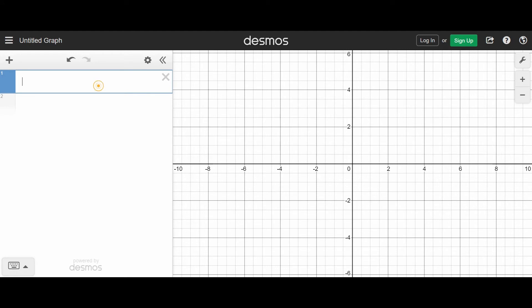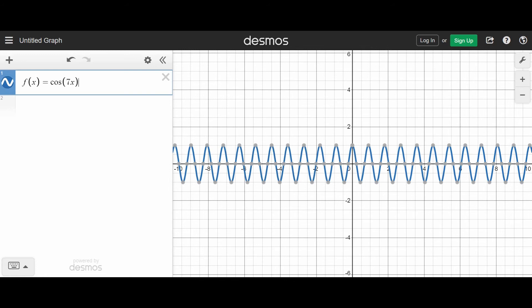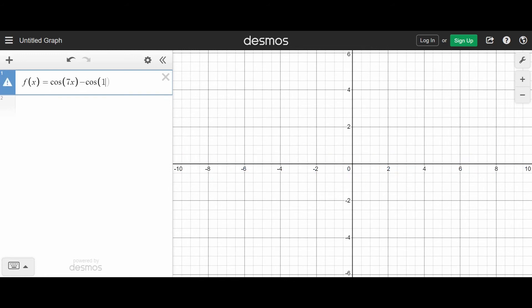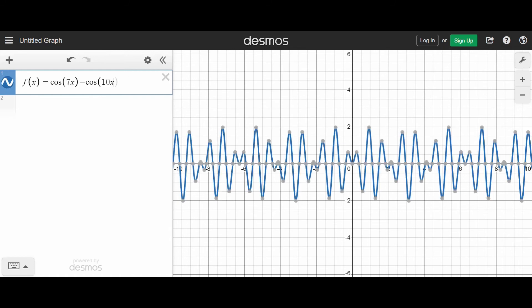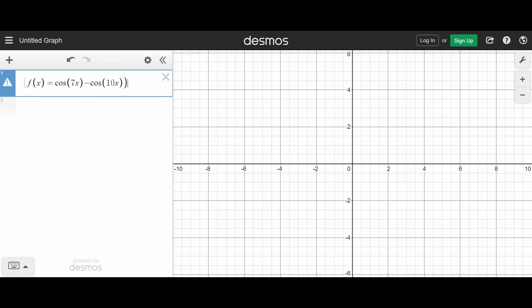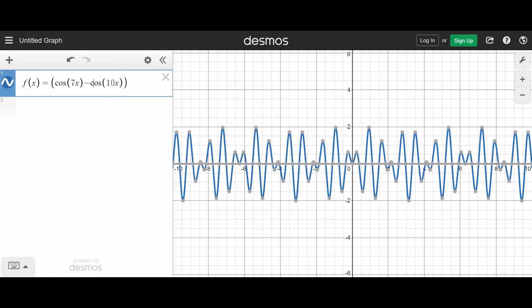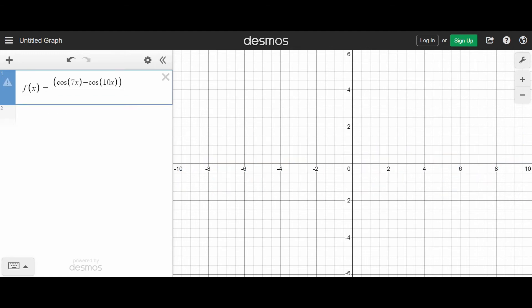So let's say you have a function. One function that comes to mind that some folks have been asking about looks something like this. I think it's something like cosine of 7x minus cosine of 10x, and then divide all of that, put parentheses here, divide that by x squared.